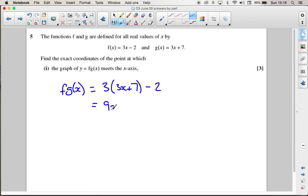So that's going to give me 9x plus 21 minus 2, which is obviously 9x plus 19.